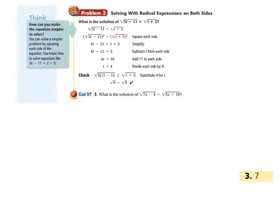Now this next part shouldn't seem unfamiliar to you: solving with a radical expression on both sides. We have the square root of 5t minus 11 equals the square root of t plus 5. Getting rid of that square root, we square both sides: 5t minus 11 equals t plus 5. Now we can move stuff around. Subtract t from both sides and add 11 to both sides, so 4t equals 16. t is indeed 4. You do need to run the check on the original equation, plugging that 4 back in for t on both sides and proving that it is indeed true.